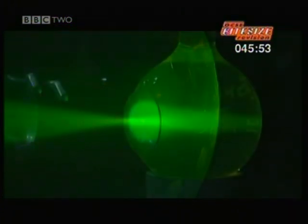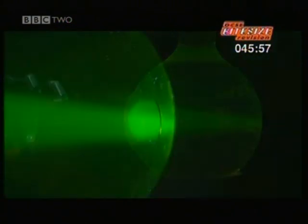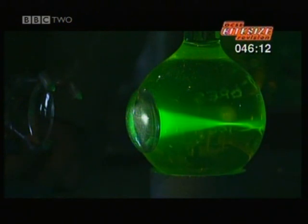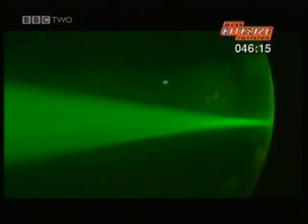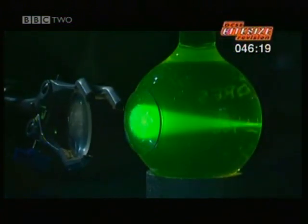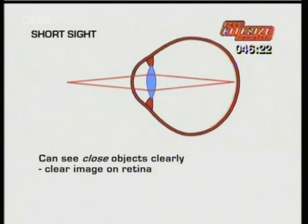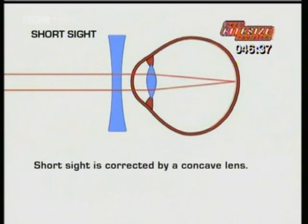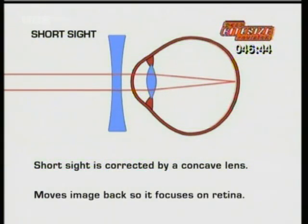This is called short-sightedness. In other people, the light rays don't converge at all — this is called long-sightedness. Short or long-sighted eyes need outside help: spectacles or contact lenses. The extra lens moves the point where the light rays converge. People with short-sight can see close objects clearly because the lens can focus a clear image on the retina, but can't see distant objects clearly because the image falls short. Short-sight is corrected by using a concave lens in glasses or contact lenses, which moves the clear image back so it focuses on the retina.